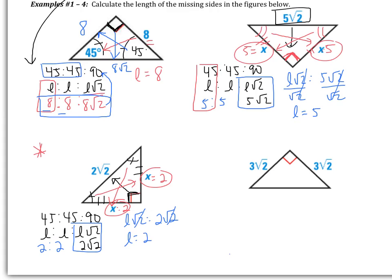You have one more to do on your own — number 4. Pause the video and try this one on your own. I'd like you to set up a ratio. You cannot use the Pythagorean theorem. Set up a ratio like we did in the first three, then solve for the last side. Good luck.